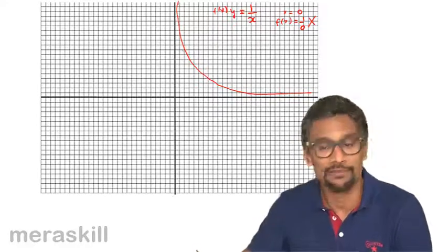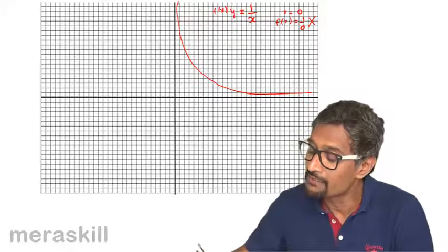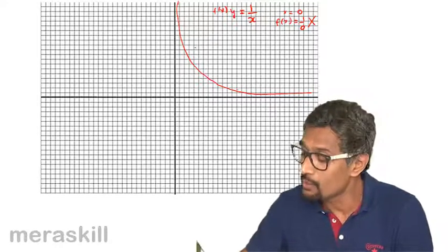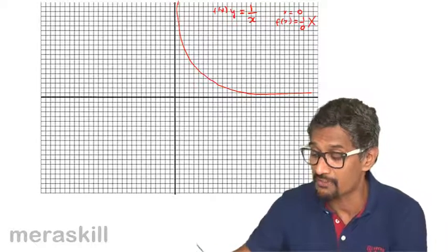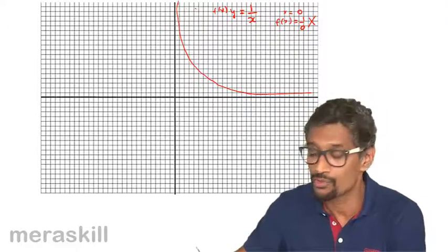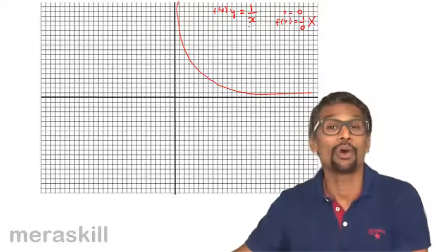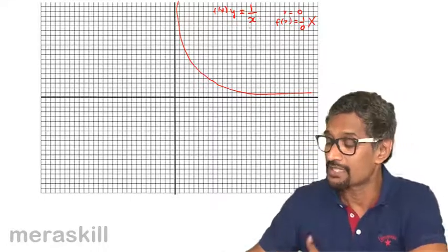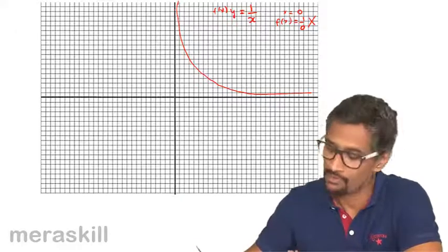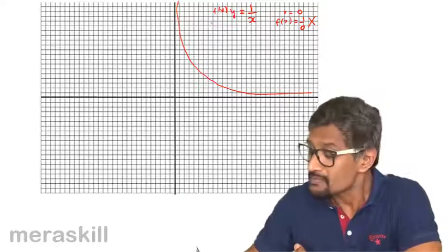You find that this particular graph would never be touching the X axis or the Y axis. Because if it touches the Y axis, then the function would become, that would mean X is equal to 0, and the function would become absolutely indeterminate or undefined. In such cases, the function has no meaning for X is equal to 0. But it will attain a specific value.